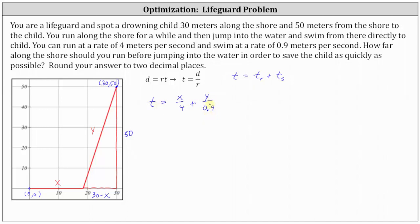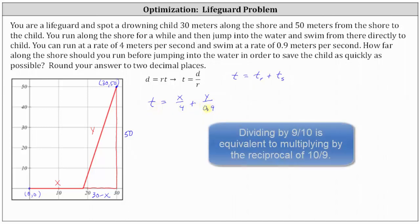From here, we need to write T as a function of just one variable. We will write T in terms of x. Before we do this, notice how dividing by 9/10 is equivalent to multiplying by 10/9. So let's write this as T equals (1/4)x plus (10/9)y.